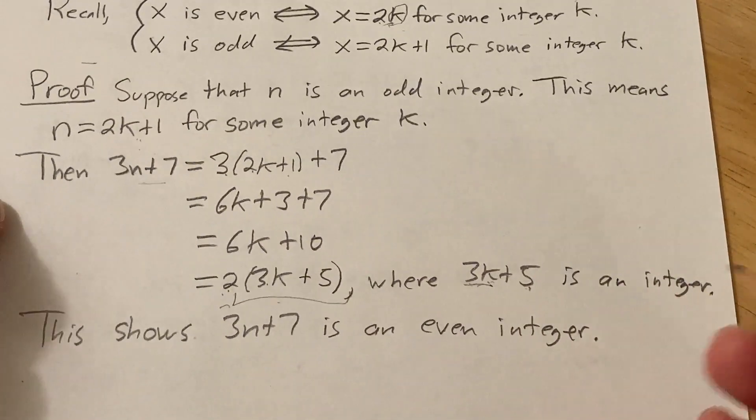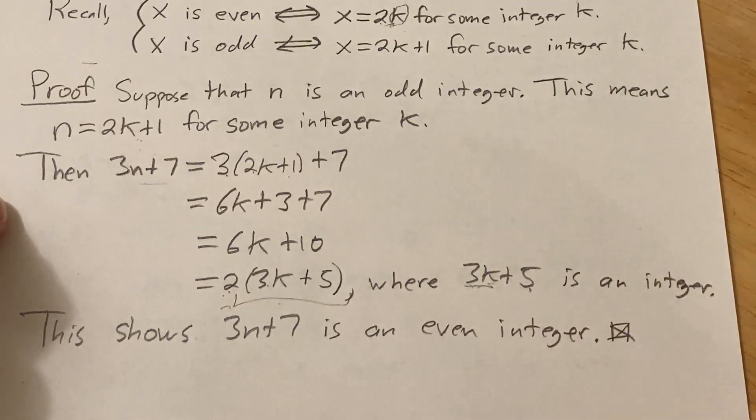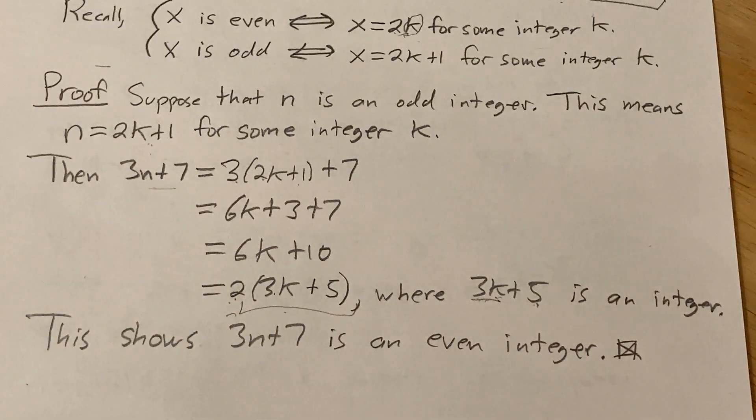And when you finish your proof, it's good to write something at the end. Some people write QED, I like to put a box with an X, that's the symbol I like to use. Good luck.